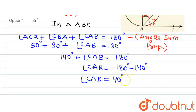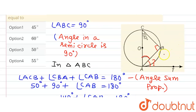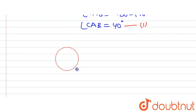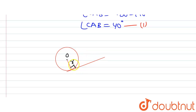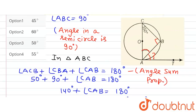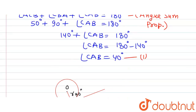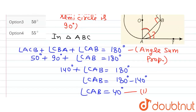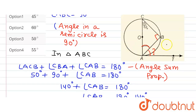We will use equation 1 later. Now, AT is the tangent and OA is the radius of the circle, since AOC is the diameter. When a tangent is drawn to a circle, the angle between the tangent and the radius at the point of contact is always 90 degrees. So in our case, angle CAT — or angle OAT — will be 90 degrees.